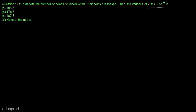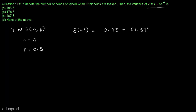Note that this question is linked to the last question that I solved, so I am writing some of the information here directly. We know that y follows a binomial distribution with n equal to 3 and p equal to 0.5. From the last question, we calculated that the expected value of y squared is equal to 0.75 plus 1.5 squared, which equals 3. We also calculated that the expected value of z is equal to 19.